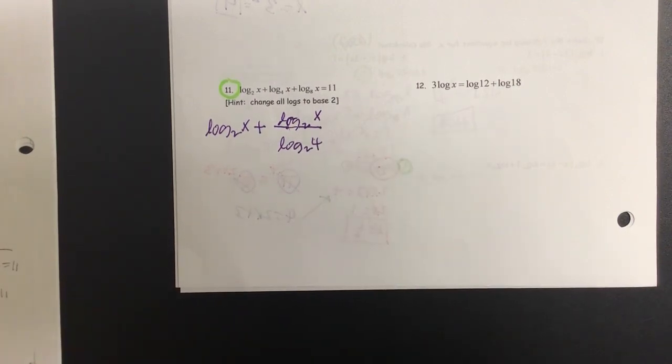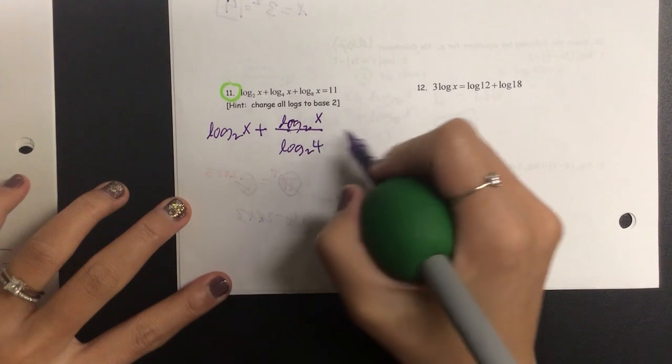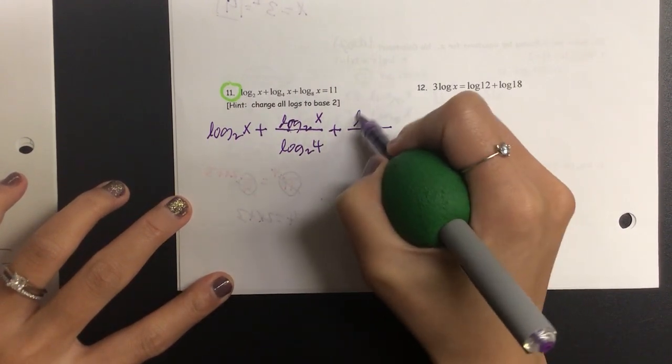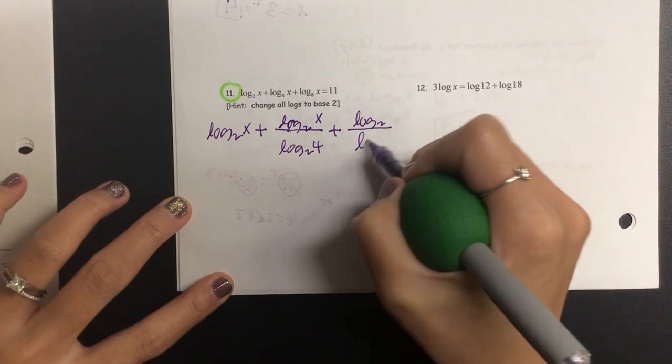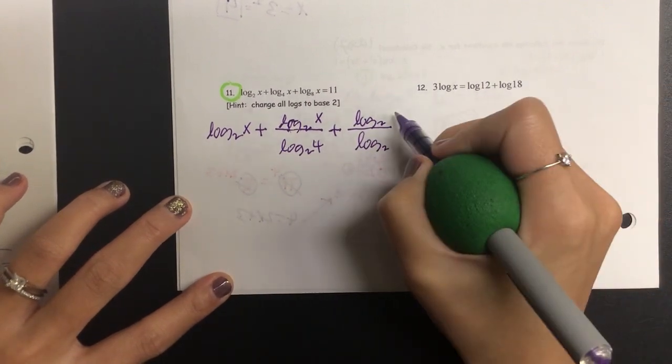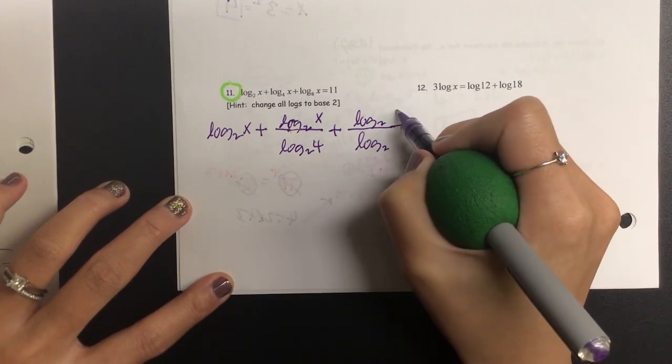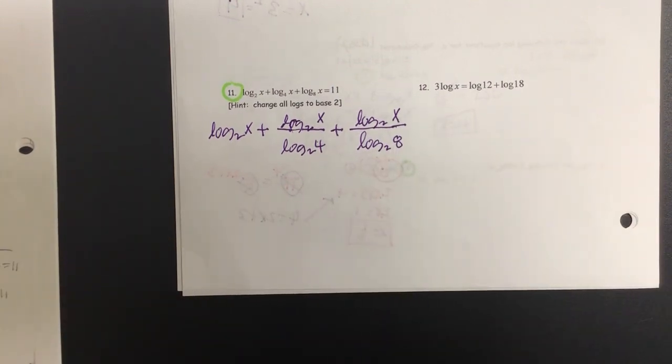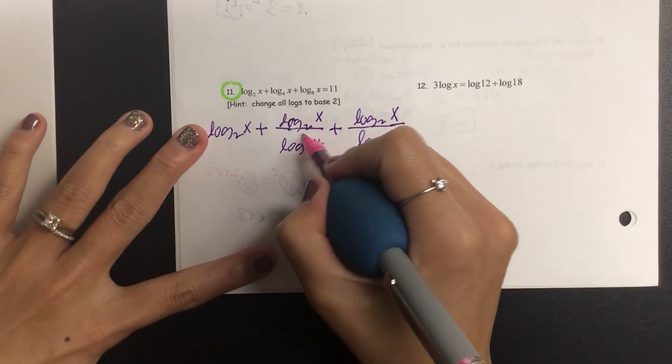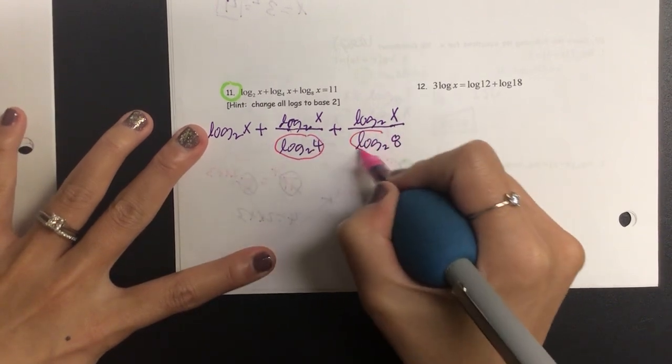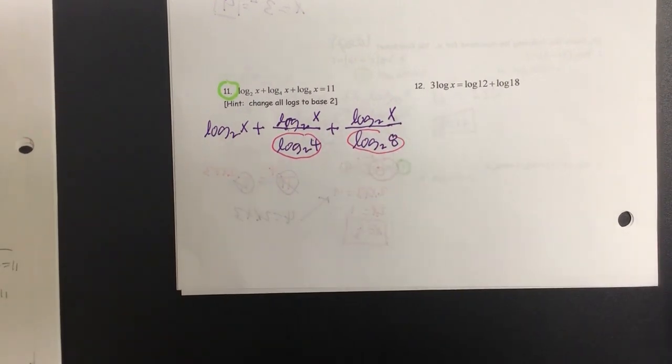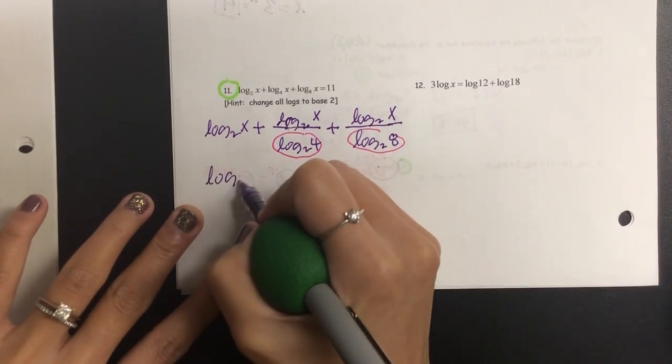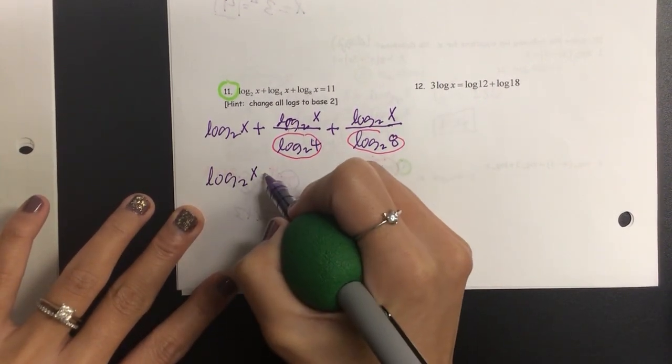Slow down. So we have log base 2 for both of them. And then on the top I'm going to put x and on the bottom I'm going to write 4. And that's the rule for change of basis if you did not remember. The next one, same thing. We have log base 2, log base 2. What's going to go on the top? X. What's going to go on the bottom? 8. The parts that we can compute, these two do not have a variable, we can compute these two.